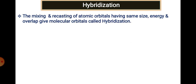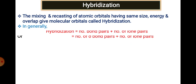Hybridization is a mixing and recasting process of atomic orbitals of the same size, energy, and overlap to produce molecular orbitals. The hybridization number equals the number of bond pairs plus the number of lone pairs, or equivalently the number of sigma bonds plus the number of lone pairs. Pi bonds are non-directional in nature, so they do not decide geometry in VSEPR — only sigma bonds and lone pairs are counted.